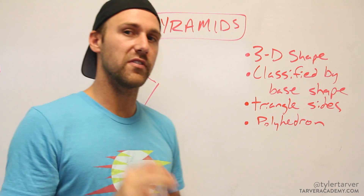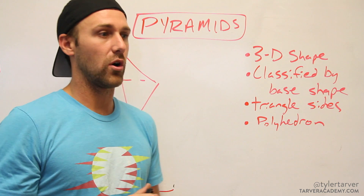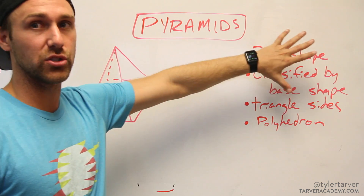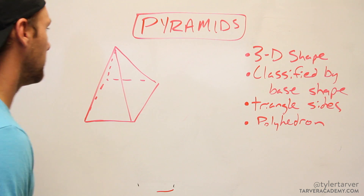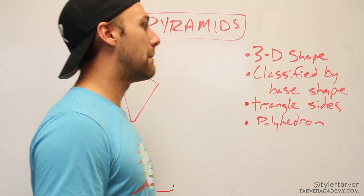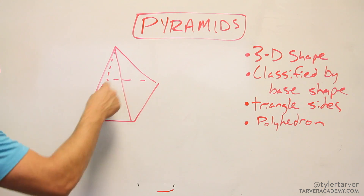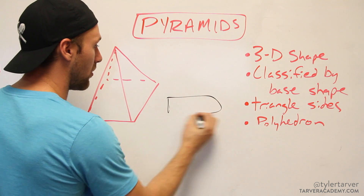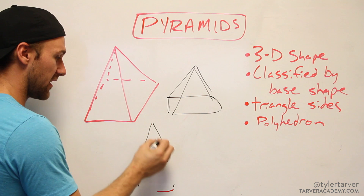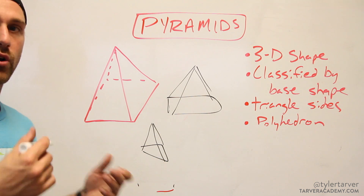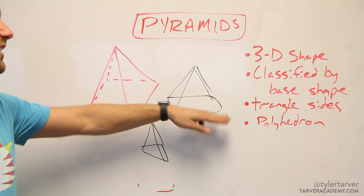A pyramid is a three-dimensional shape, so it's not flat like a circle, square, rectangle, or triangle. You name a pyramid based on the base shape — that's how it gets classified. For instance, this would be a square pyramid. If it had a rectangle, it'd be a rectangular pyramid. If I had made a triangular base, it would be a triangular pyramid.